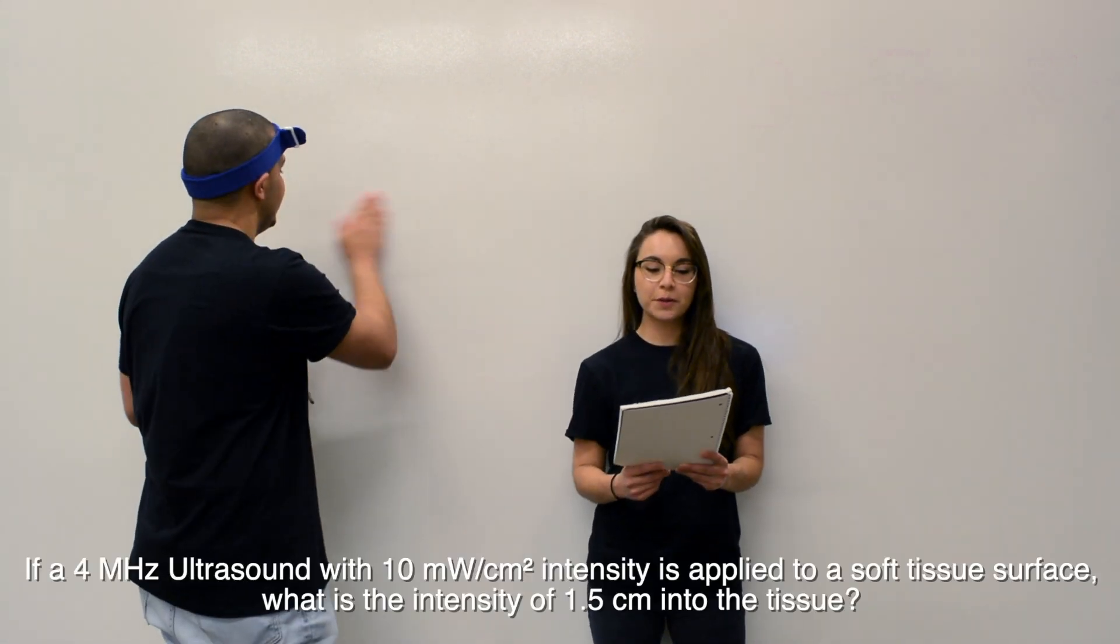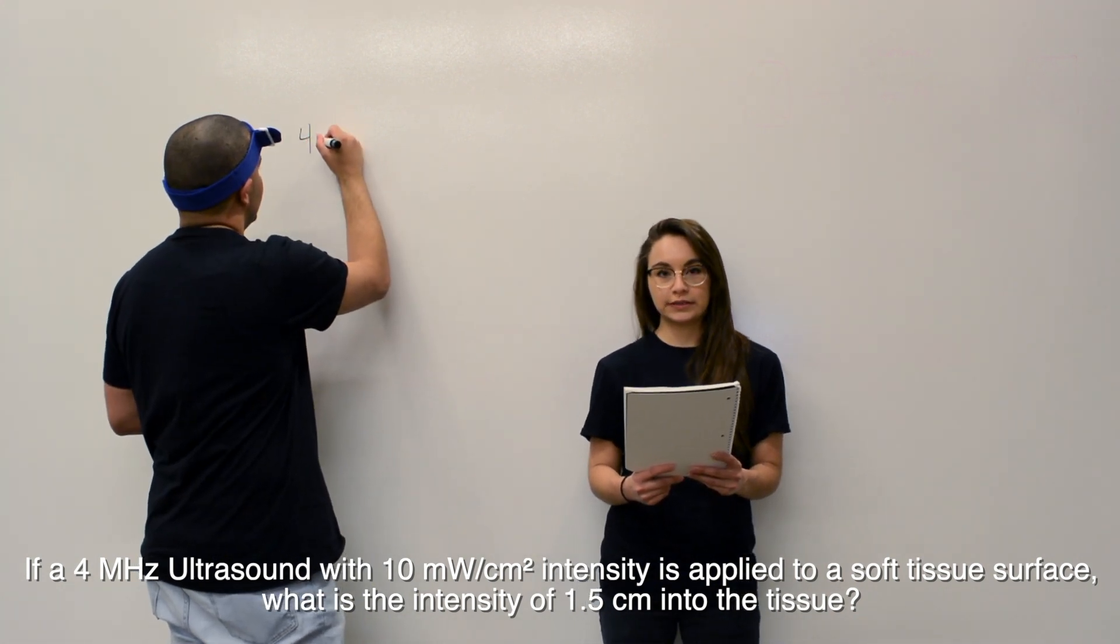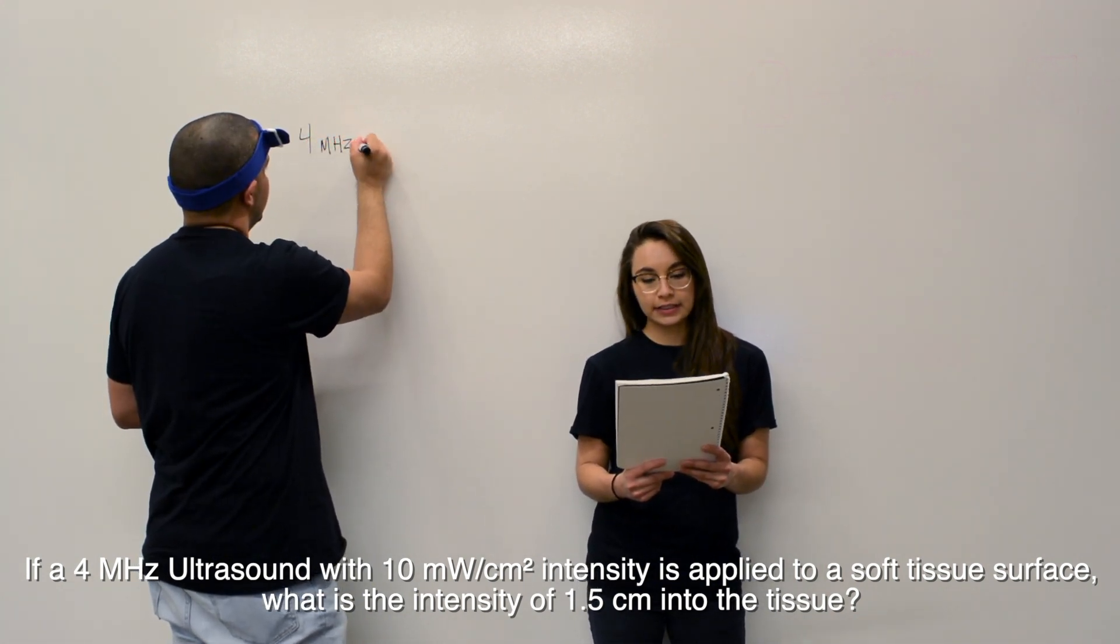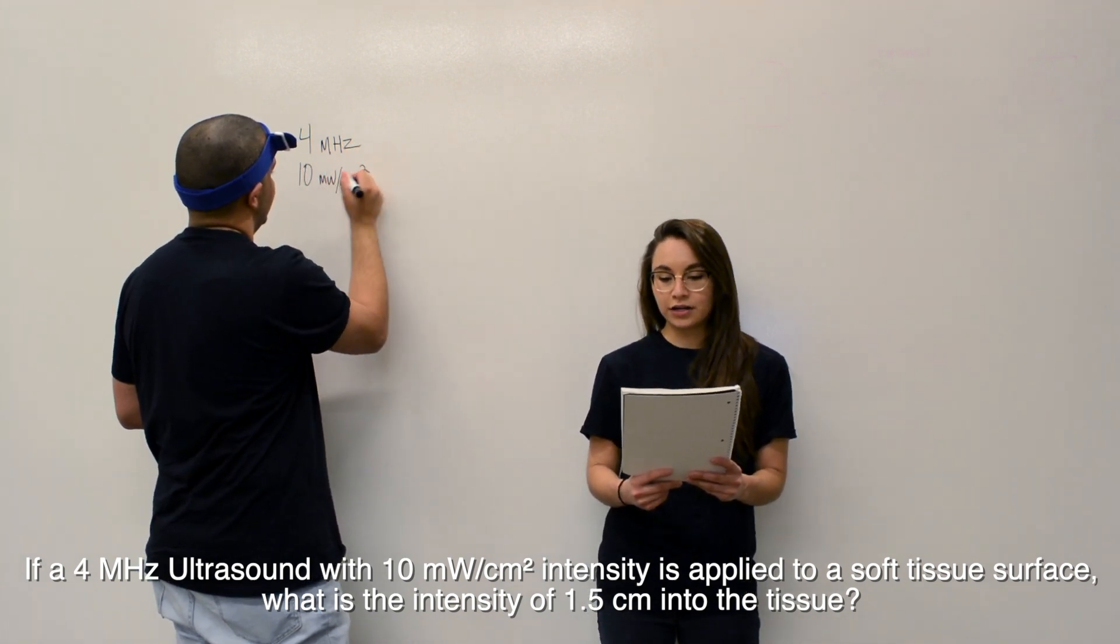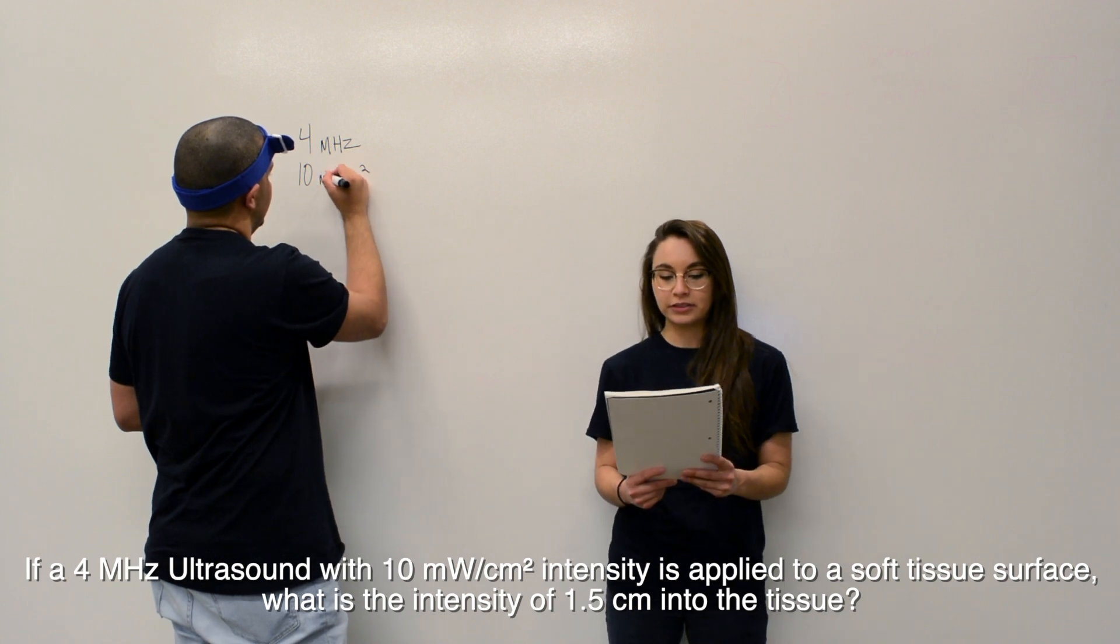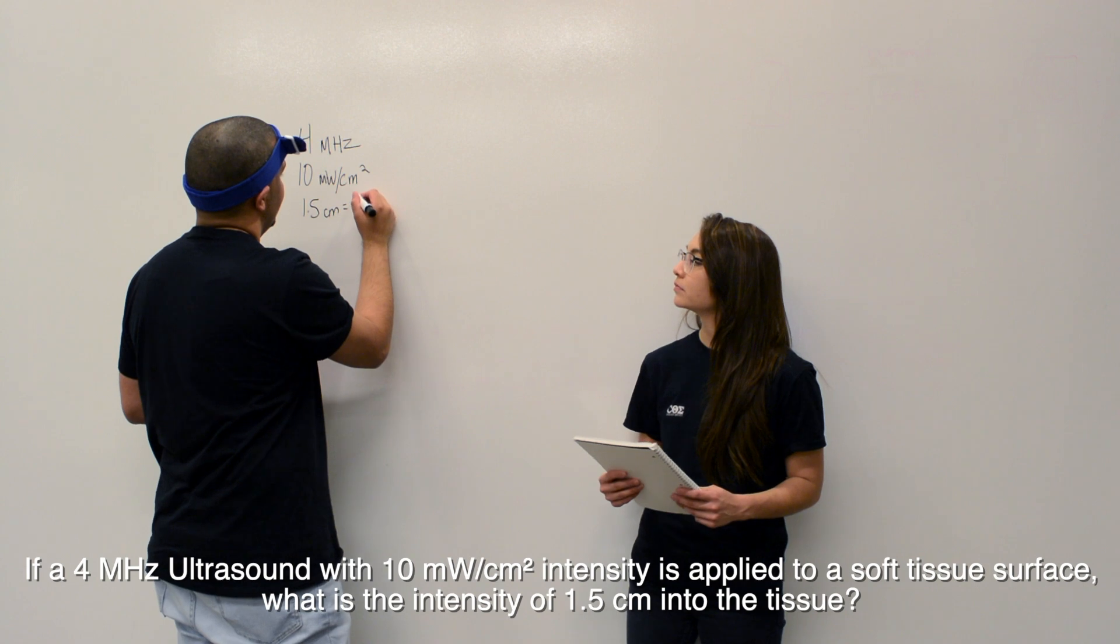President Ashley was asking me to solve for attenuation, so here we are. Assist Brit, go ahead and read me my problem. So, a 4 megahertz ultrasound with 10 milliwatts per centimeter squared intensity is applied to a soft tissue surface. What is the intensity of 1.5 centimeters into the tissue?